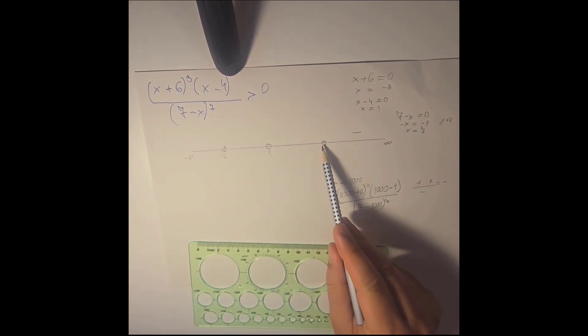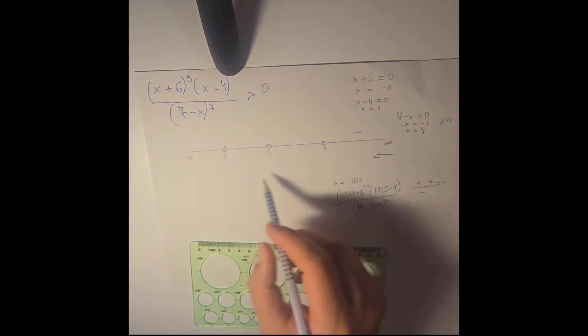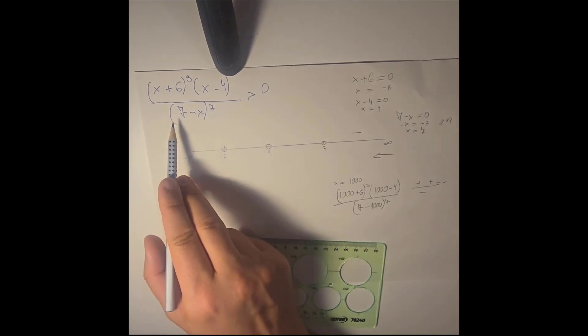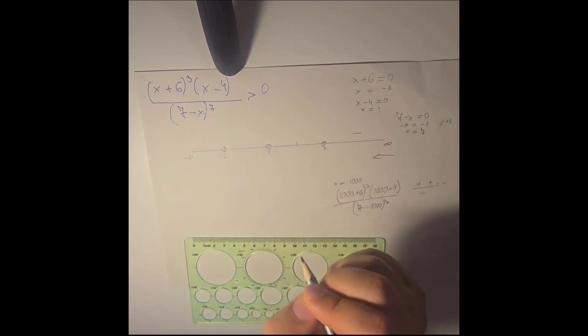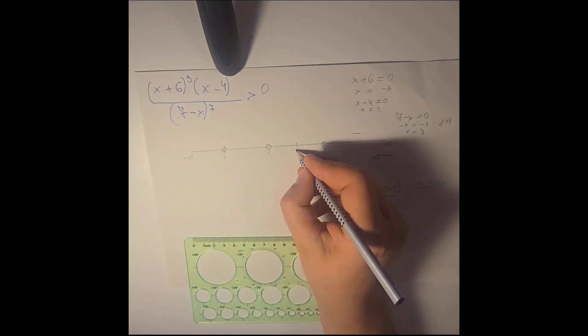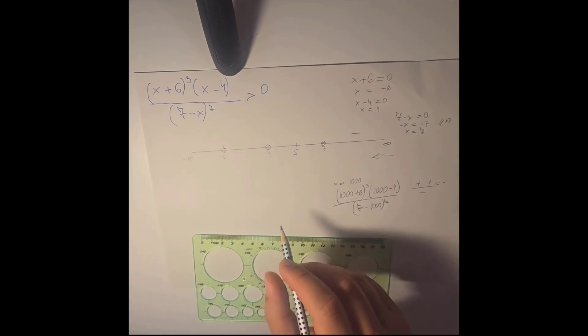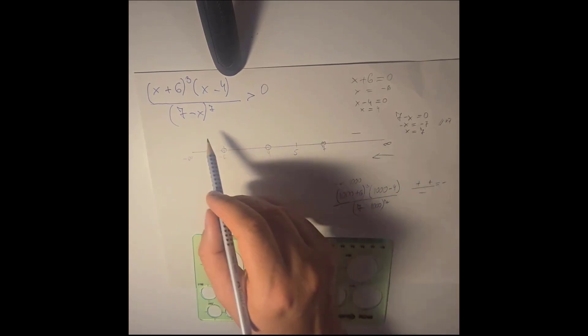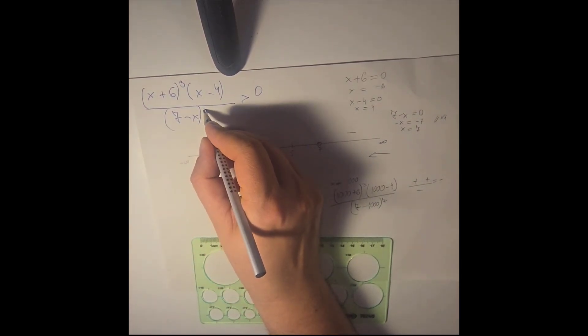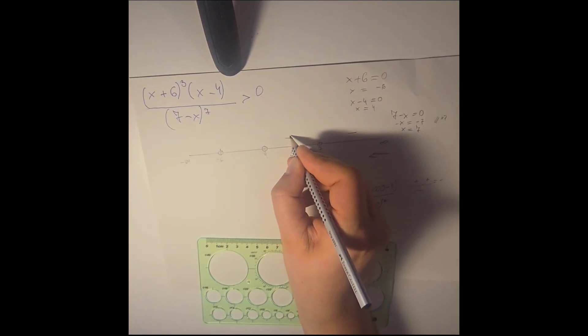And then we take a look at the 7. Where did this 7 come from? Because we are going in this direction from infinity to minus infinity. So the 7 we get it from here, 7 minus x divided by 7. We are going to say 7 is to the power of an even thing. So it changes the sign. So between 4 and 7 the results would be a plus.